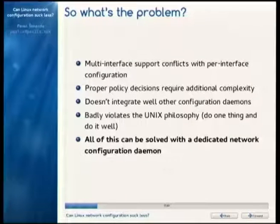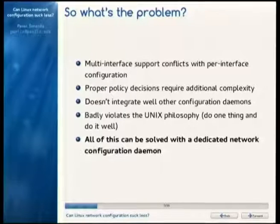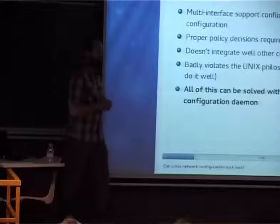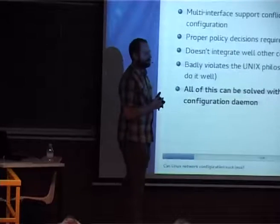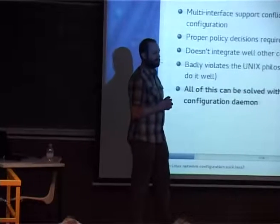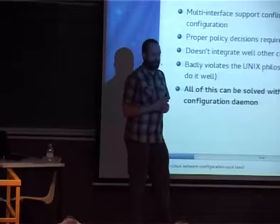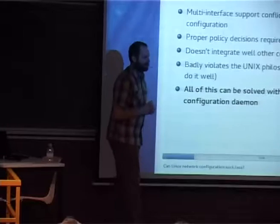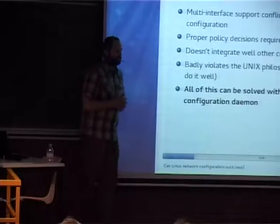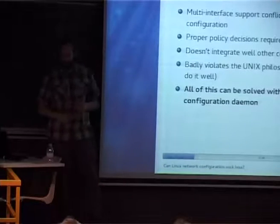For example, there is a big problem when you want to resolve various names through different name servers — when you connect to a company VPN, you want all company addresses resolved through the VPN DNS, but use your local network's name service for everything else. This is not possible via resolvconf currently, but it is possible with dnsmasq or — as I heard yesterday — Unbound also supports it.